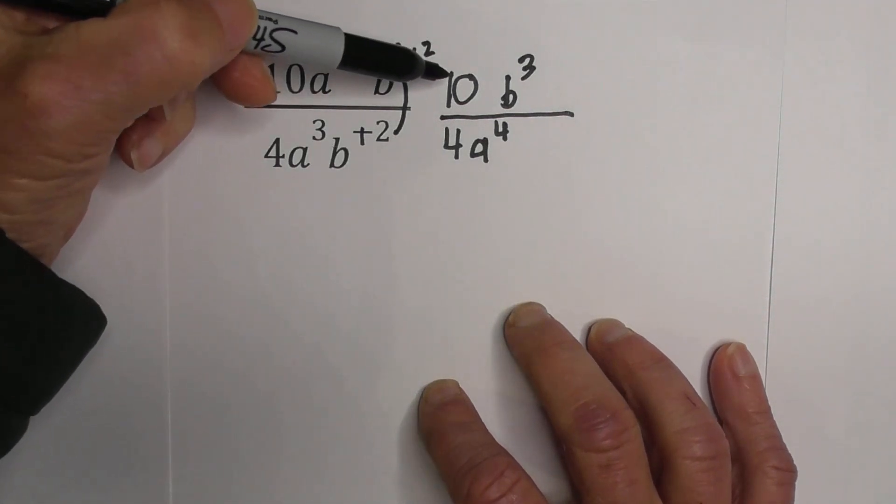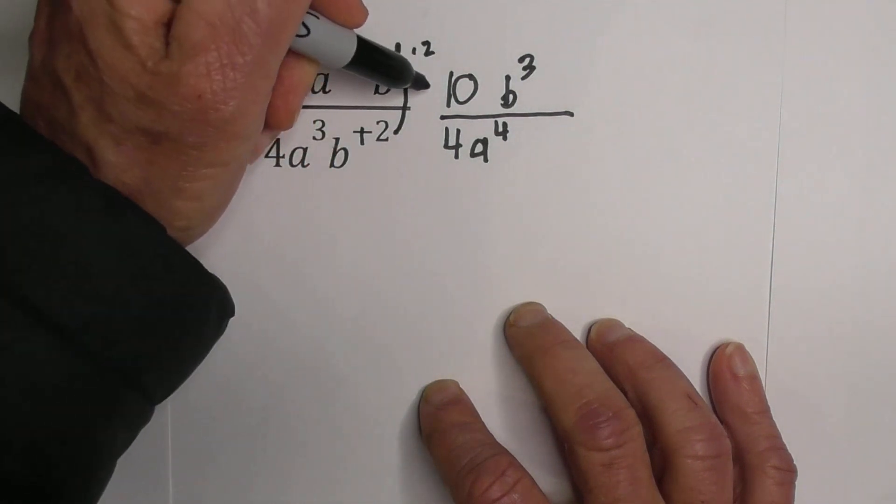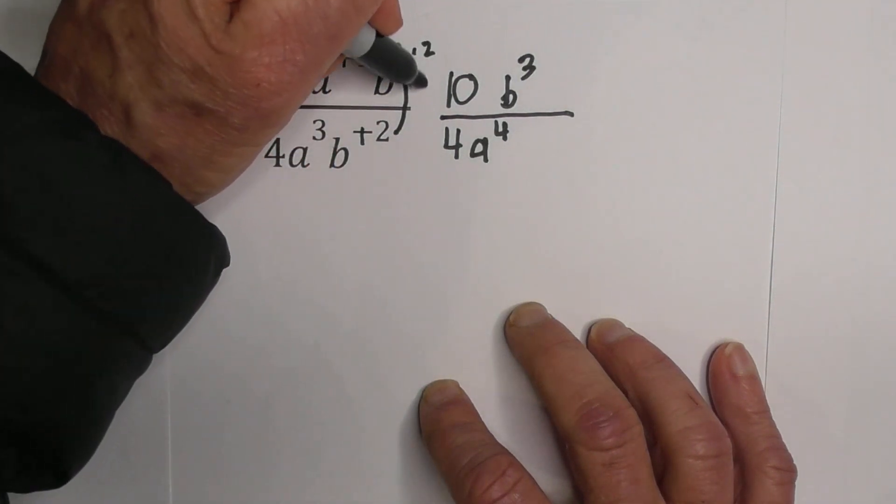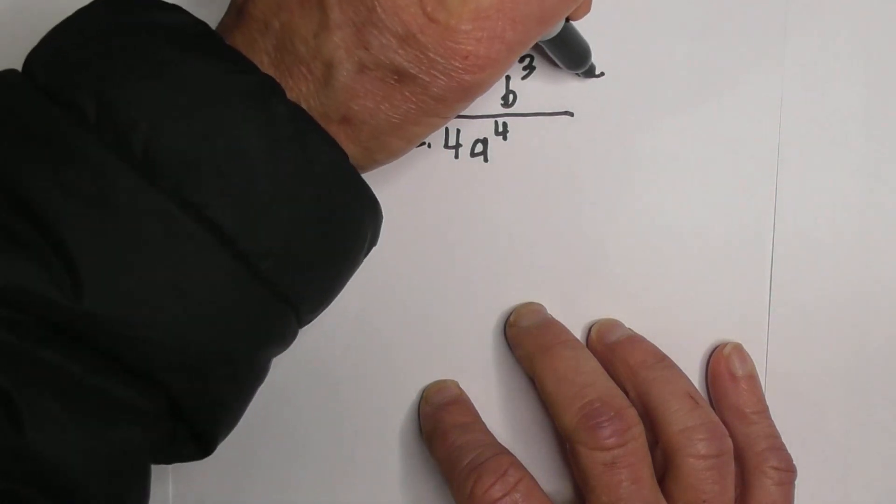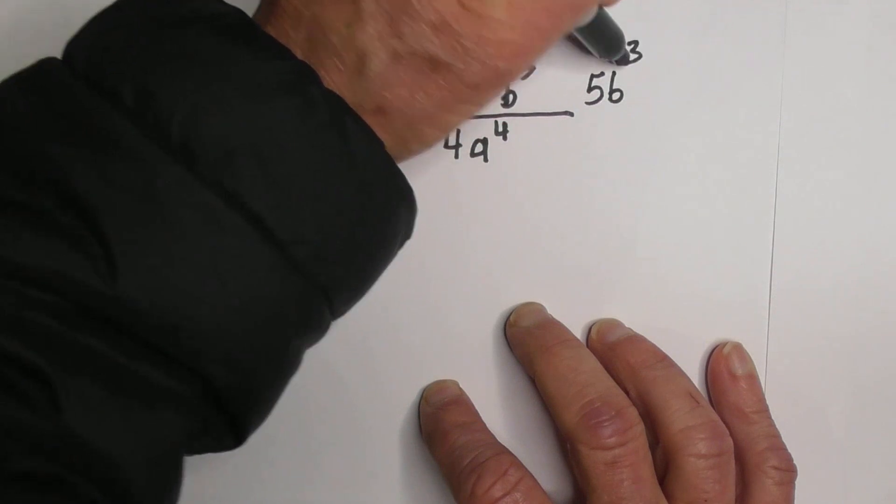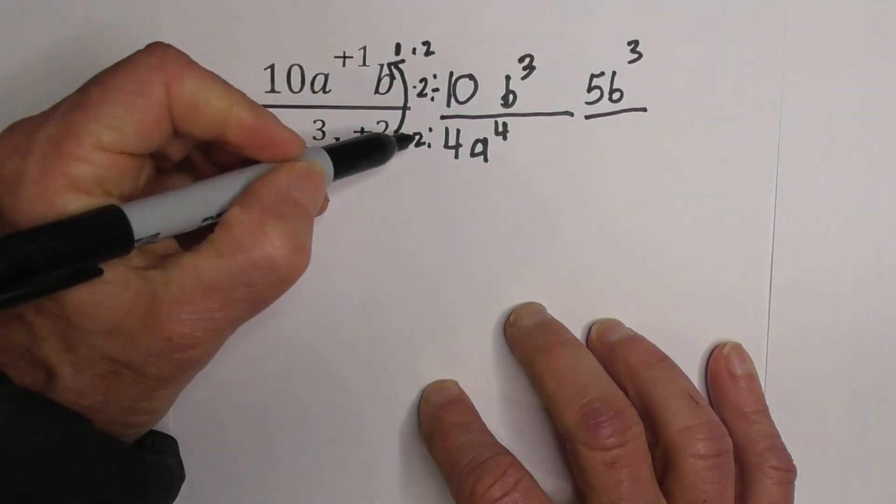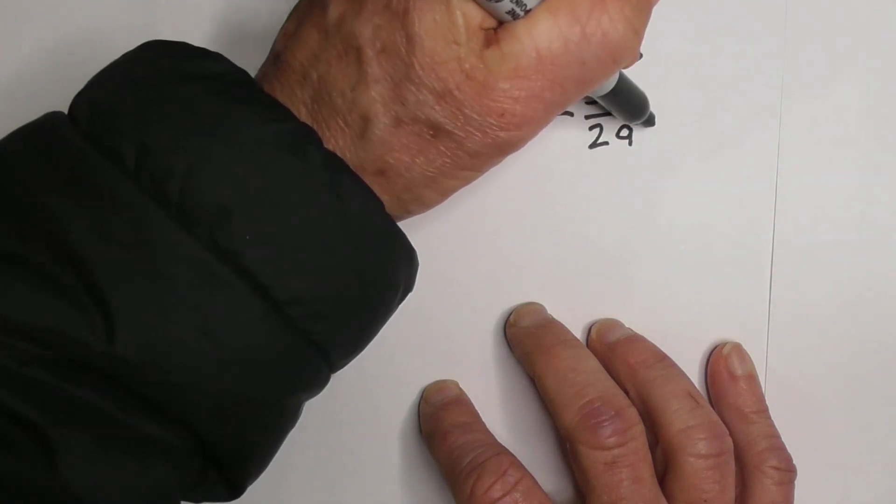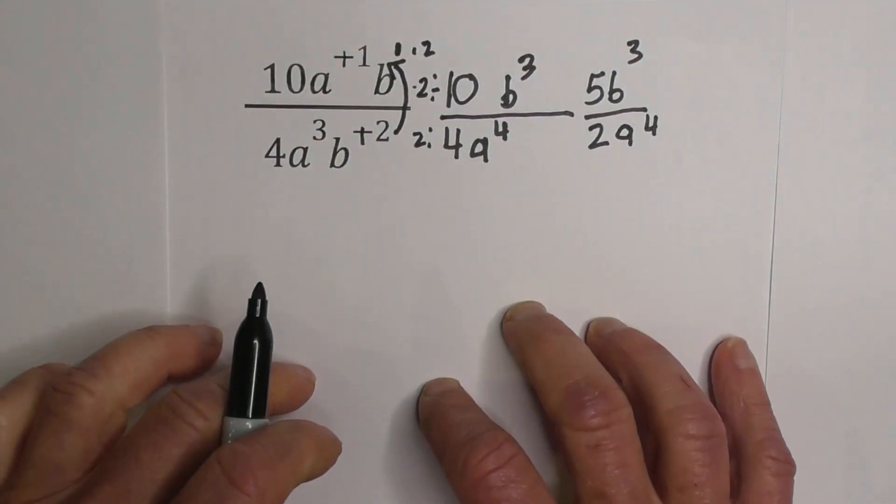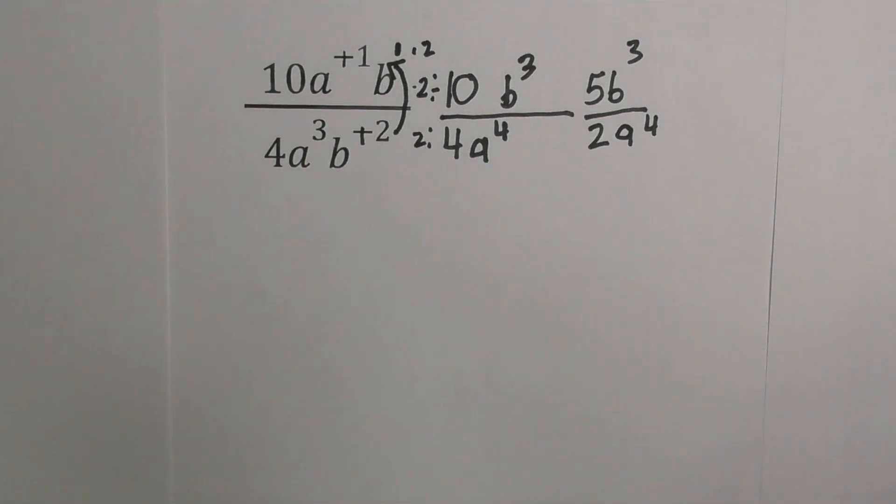Well, we then can reduce this fraction by dividing by 2. 2 goes into 10, we'll divide each by 2. 2 goes into 10 five times. We're going to keep the B to the 3rd, and then 2 goes into 4 two times, and we have A to the 4th. So there's our first example with negative exponents.